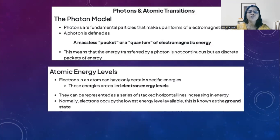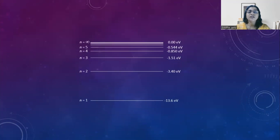These electron energy levels are basically stacked horizontal lines and their transitions are shown as colors. The stacked horizontal lines have specific values of energy, measured in electron volts. The n=1 quantum number has the lowest energy and it's called the ground level. When n tends to infinity, the electron has the highest energy, which is zero.